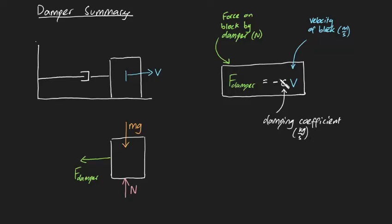And this annoying minus sign is just there to associate direction. So if the block is moving to the right, then the damping force will be negative because it's acting towards the left.